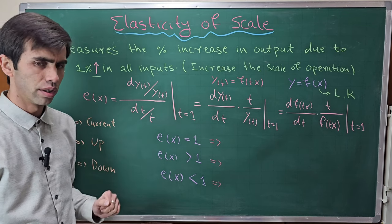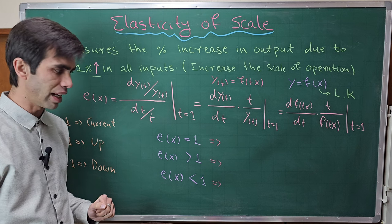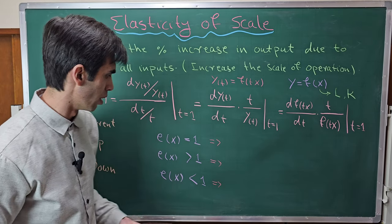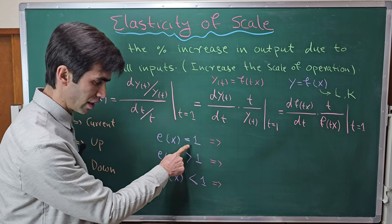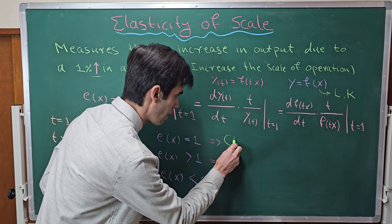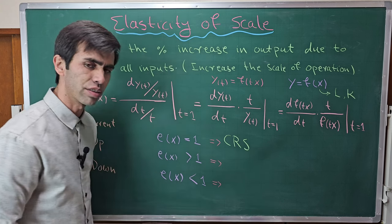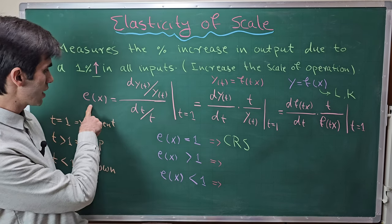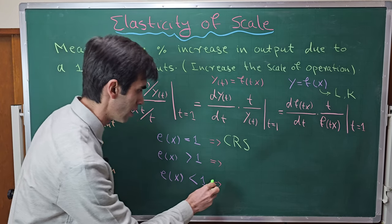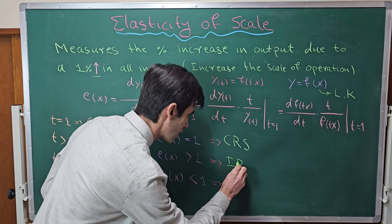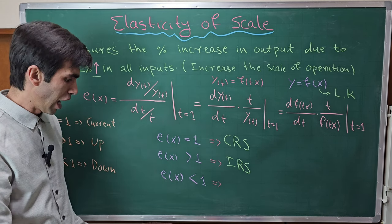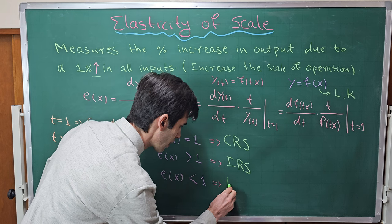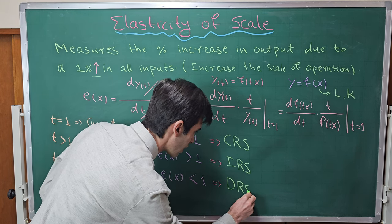When we use this elasticity of scale formula: if the result e_x equals 1, we have a constant returns to scale production function. If e_x is greater than 1, we have an increasing returns to scale production function. If e_x is less than 1, we have a decreasing returns to scale production function.